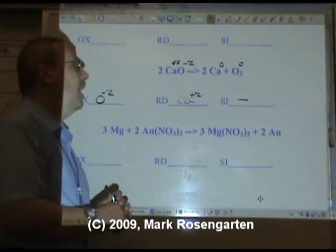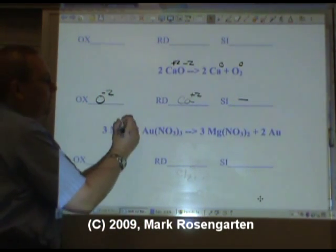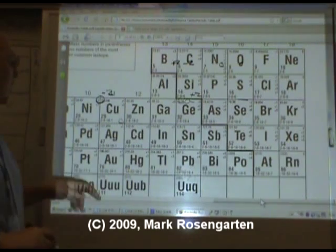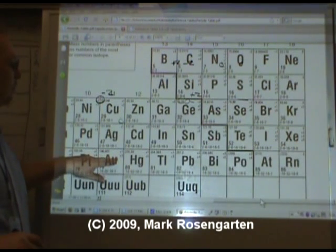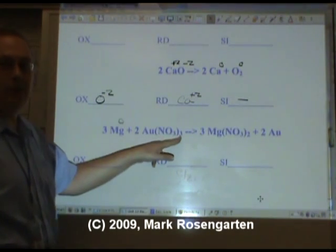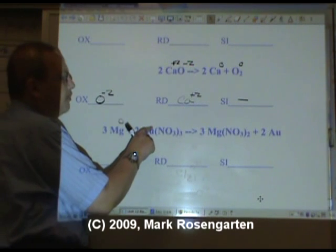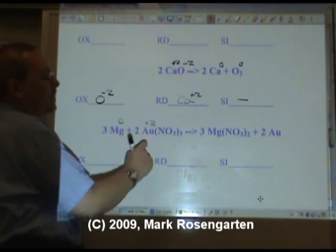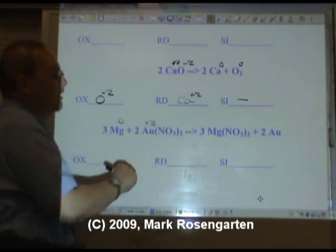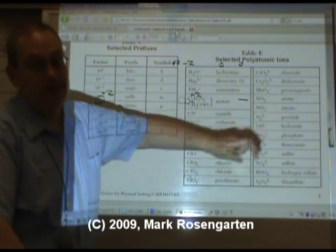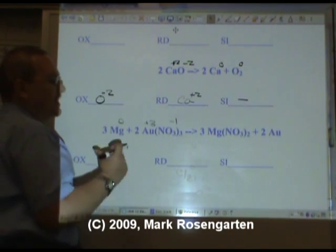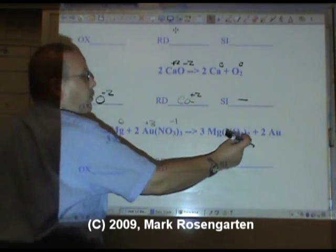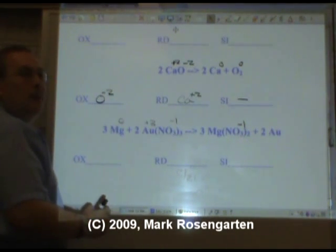Now, in this reaction, magnesium is by itself. The gold has a charge of, well, gold can either be plus one or plus three. Well, what's that three doing down there? If gold was plus one, we wouldn't have a three down there. Gold three, that's where that three comes from, because nitrate has a minus one charge. In this particular instance, it's not important to get nitrogen and oxygen separately because we have nitrate on both sides of our reaction. So we can treat it as one piece.